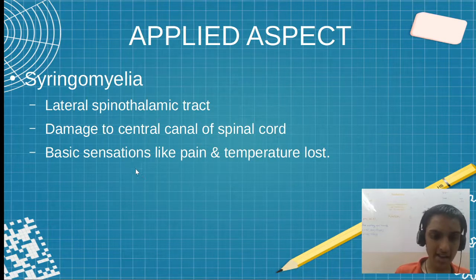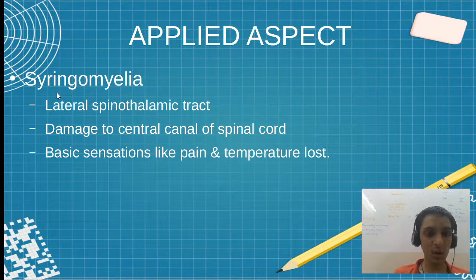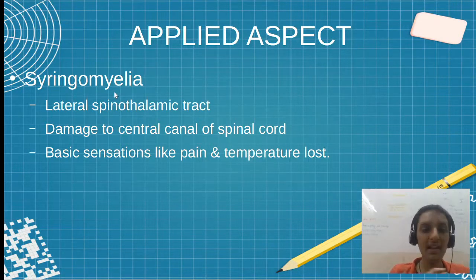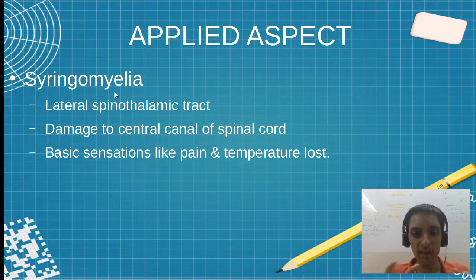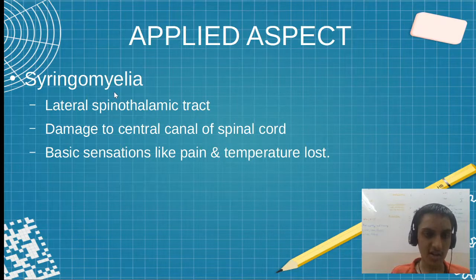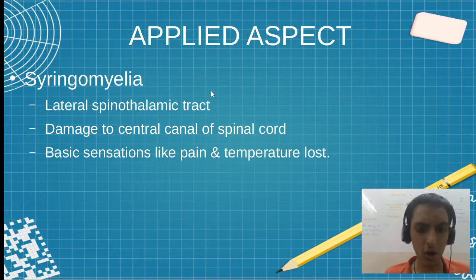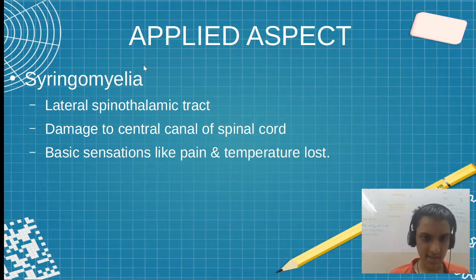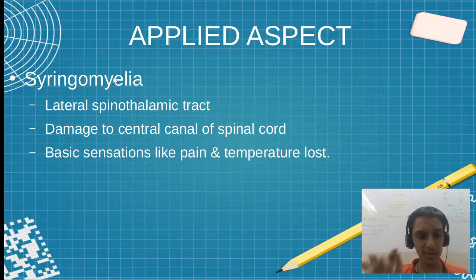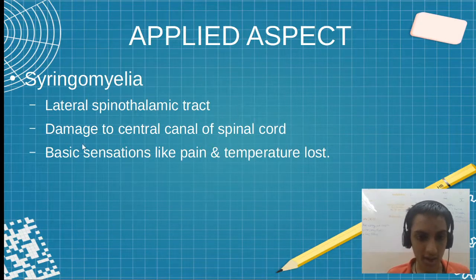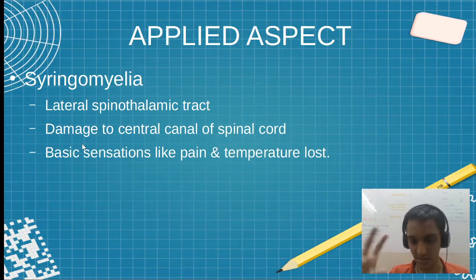Let us see the applied aspect: syringomyelia. Syringo means central canal or cavity, and myelia refers to the neurons. So the neurons passing through the central canal are lesioned. It is a lesion of the neurons in the central canal involving the lateral spinothalamic tract. Basic sensations will be lost in syringomyelia. The lesion is in the central canal, and what is lost are basic sensations.